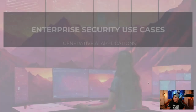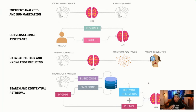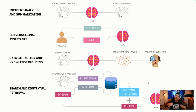Starting with security use cases: many companies are already using generative AI and language models to summarize information. People without expertise in multiple areas are benefiting from getting up to speed on analyzing complex scripts, especially in a security analyst context. Being able to build chatbots and expose them to information for investigations is super helpful. We're also exploring how to generate new knowledge in a structured way, such as knowledge graphs, and how to extend an LLM's knowledge with additional information not in its training data.